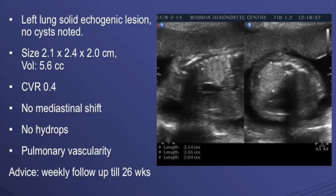Let's look at a CPAM case. How will you describe this lesion? This is involving the left lung. There is a solid echogenic lesion. There are no cysts noted. The size is so and so with the volume so and so. The CVR was 0.4. There is no mediastinal shift, there is no hydrops, and it shows normal pulmonary vascularity.